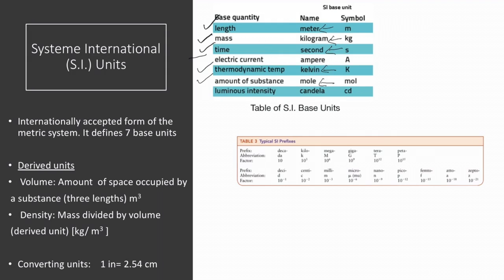Electric current is mostly used in physics, and luminous intensity is rarely used.